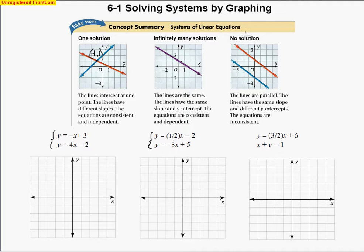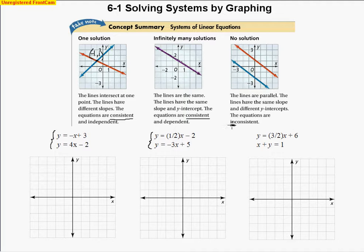For no solution, the lines are parallel and will never intersect. Since they have different y-intercepts, they're never on top of one another either. So there's no solution because they will not cross — those are called inconsistent equations. When we have solutions (either one or infinitely many), those are consistent. With one solution the equations are independent, and with infinitely many the lines are dependent upon one another.